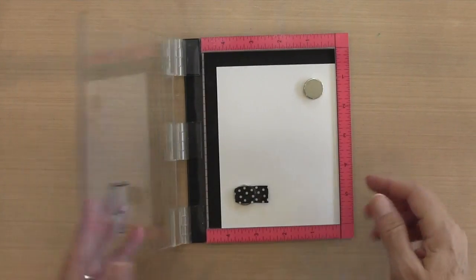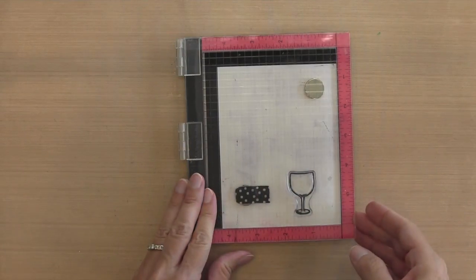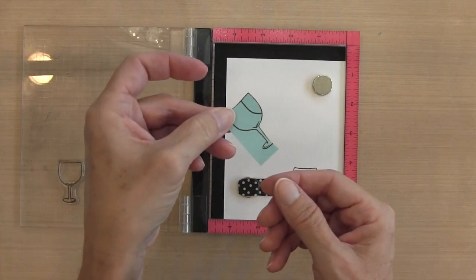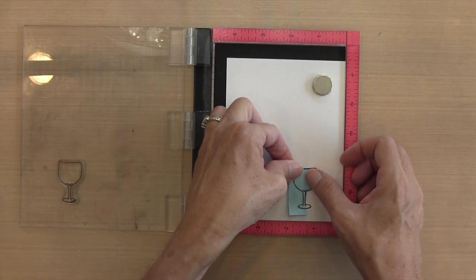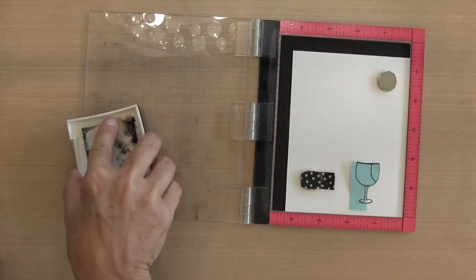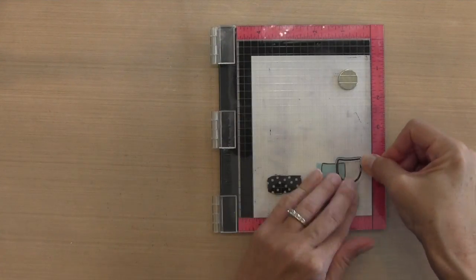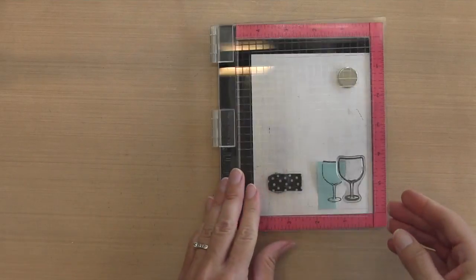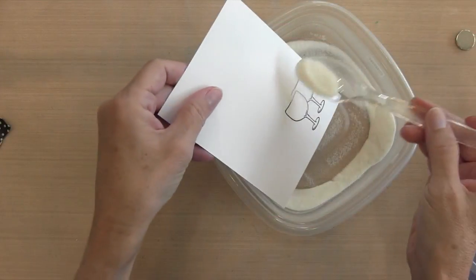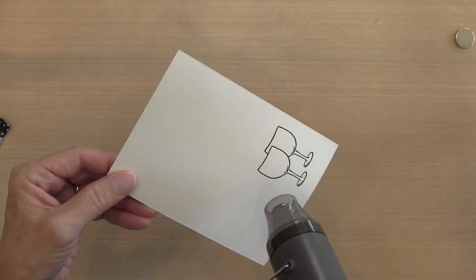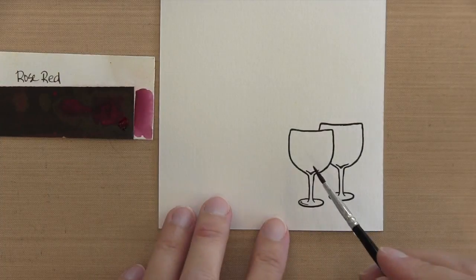So I'm going to stamp my wine glass in some Versafine Black Onyx ink. It's a pigment ink so that it stays wet and it gives me time to emboss. So I've already stamped and cut the same image out of a post-it paper. And so now I'm going to stamp my wine glass again a little bit up and to the right so it looks like this glass is behind the first glass. And then I'll sprinkle it with some clear embossing powder and heat it to set it. And that will raise up my image so that it'll help my watercolor stay in the lines.